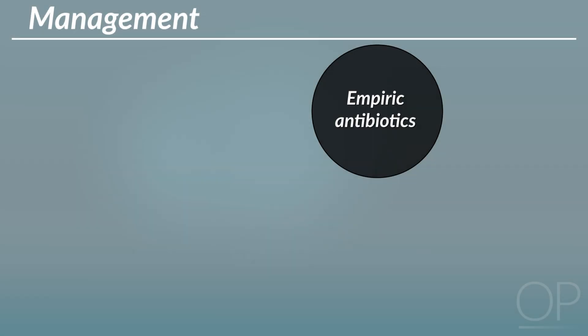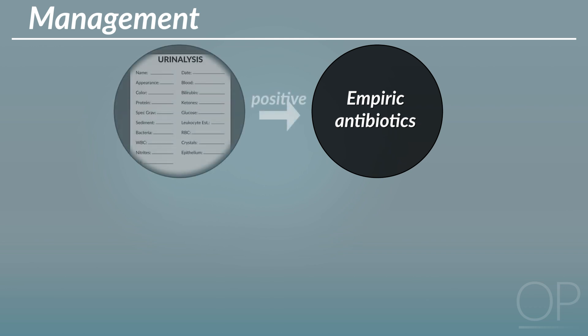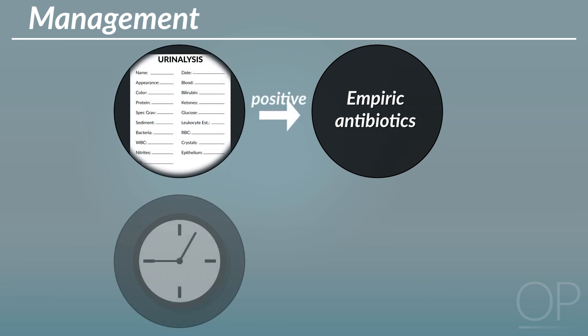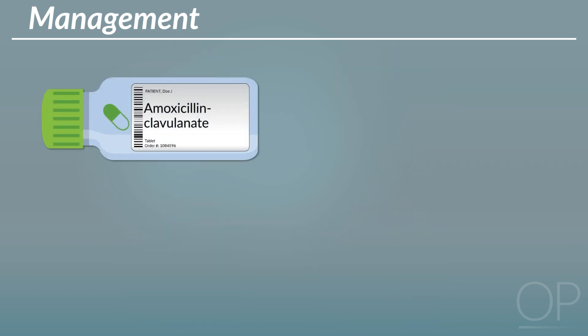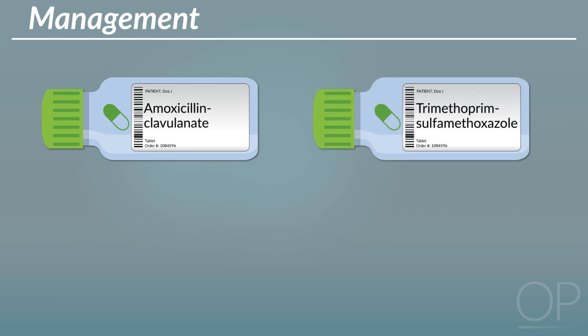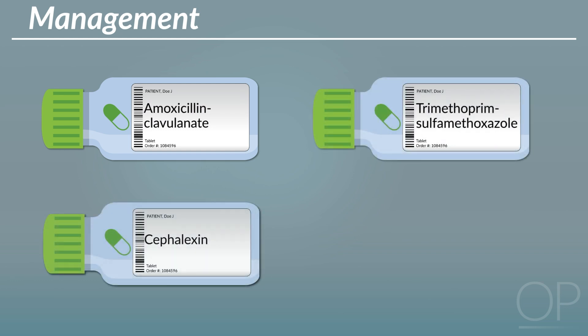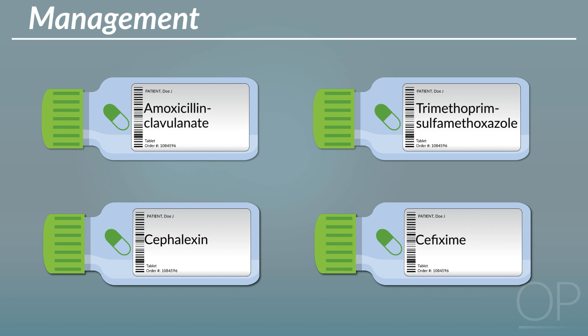Typically, empiric antibiotics are started if urinalysis is suggestive of UTI because delayed treatment increases the risk of renal scarring and other complications. Empiric oral antibiotics such as amoxicillin clavulanate, trimethoprim sulfamethoxazole, cefalexin, and cefixime are targeted at E. coli.